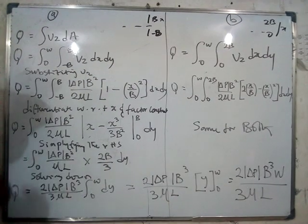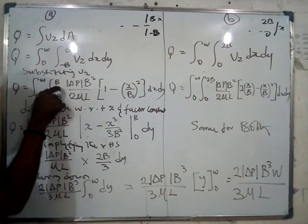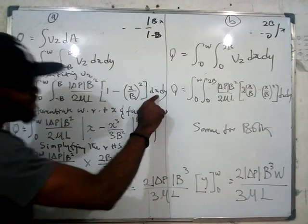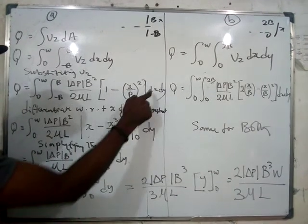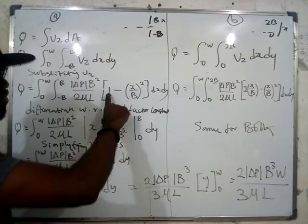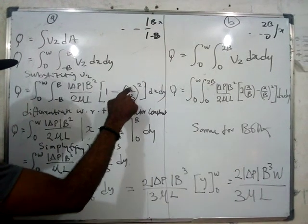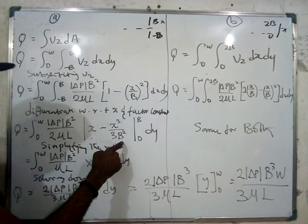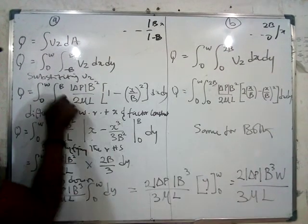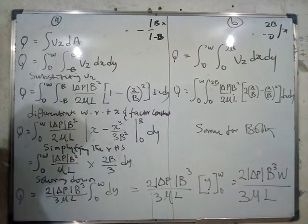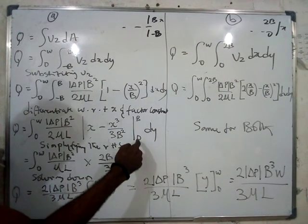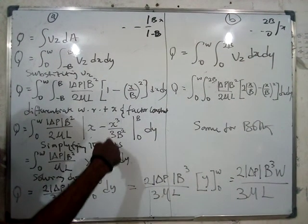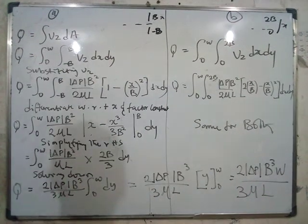This is very simple. Whenever you have something like this with two integrals, first integrate the inner one, which is with respect to x. Anywhere you have x, integrate as a constant giving x; anywhere you have x², you get x³ over 3. Once you do that, you take out this differential and apply the boundary, which is b and minus b.